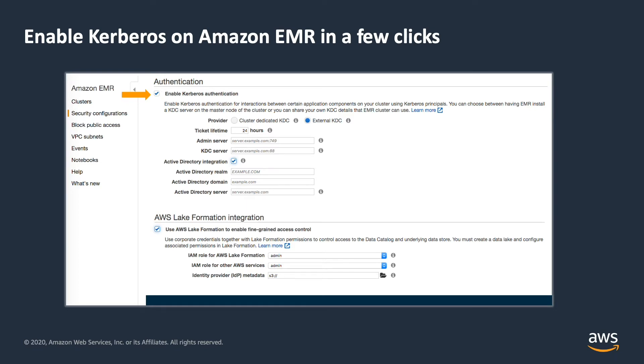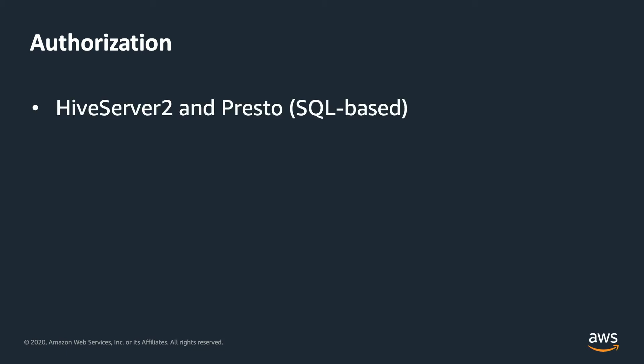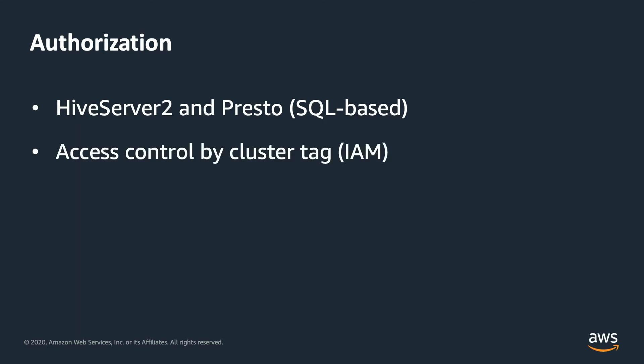There are some other important parts on this console, including the Lake Formation piece, which is a good segue to talk about authorization. The first option is Hive Server and Presto — applications you can use to run SQL queries that also allow you to control access to tables and databases using SQL-based authorization. You also have the option to control access to the cluster using IAM policies, by specifying tags for an EMR cluster and specifying which IAM users can submit a particular job using the EMR step API.